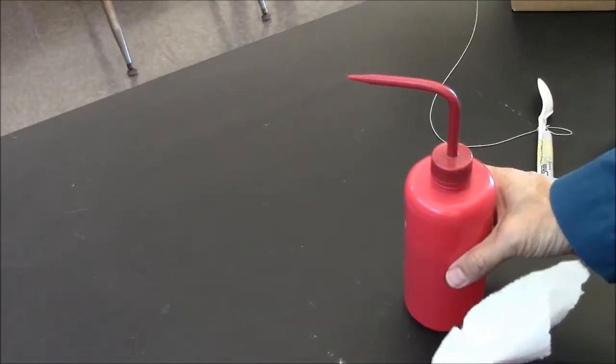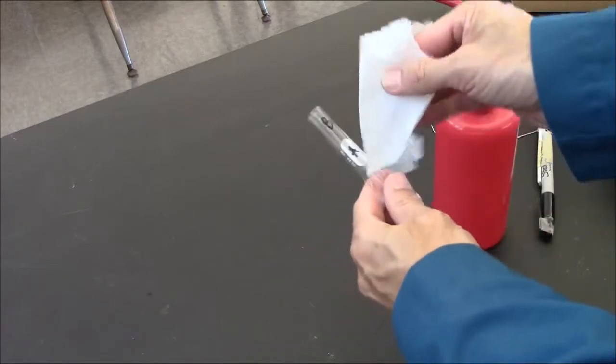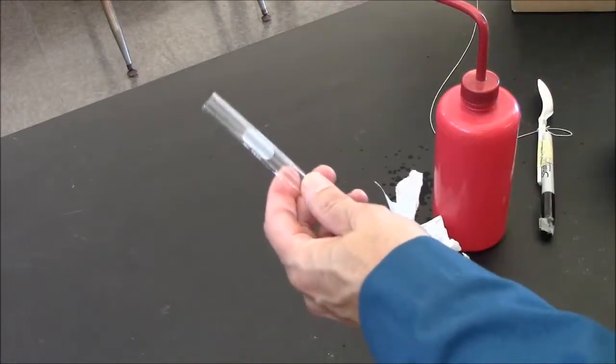This red bottle contains ethanol, a kind of alcohol. If I put some on the paper towel, I can erase the Sharpie marker easily.